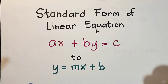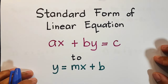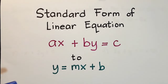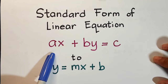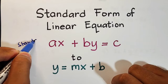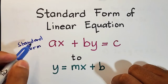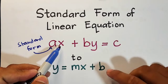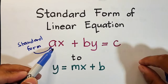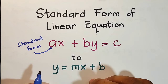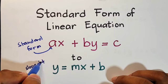Hi guys, it's me Teacher Gon. In today's video we will talk about the standard form of linear equations in two variables. We have a previous video with regards to the illustration of standard form of linear equations and I'm remaking a new video about this topic. The first form is ax plus by is equal to c — that is your standard form. Another form is y is equal to mx plus b, which is your slope-intercept form.